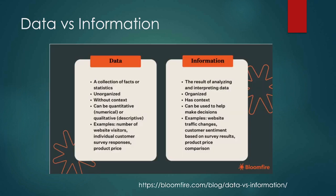Data tends to be unorganized and doesn't usually have context. Data can be quantitative or qualitative. Quantitative data is data we're saving as numbers — for example, if I asked you to rate your last meal on a scale of 1 to 10, or at the doctor's office when they ask you to rate your pain on a scale of 1 to 10. Qualitative data is if I asked you how you feel today, or what your thoughts were about your last meal — you might give me sentences, paragraphs, or descriptive words.